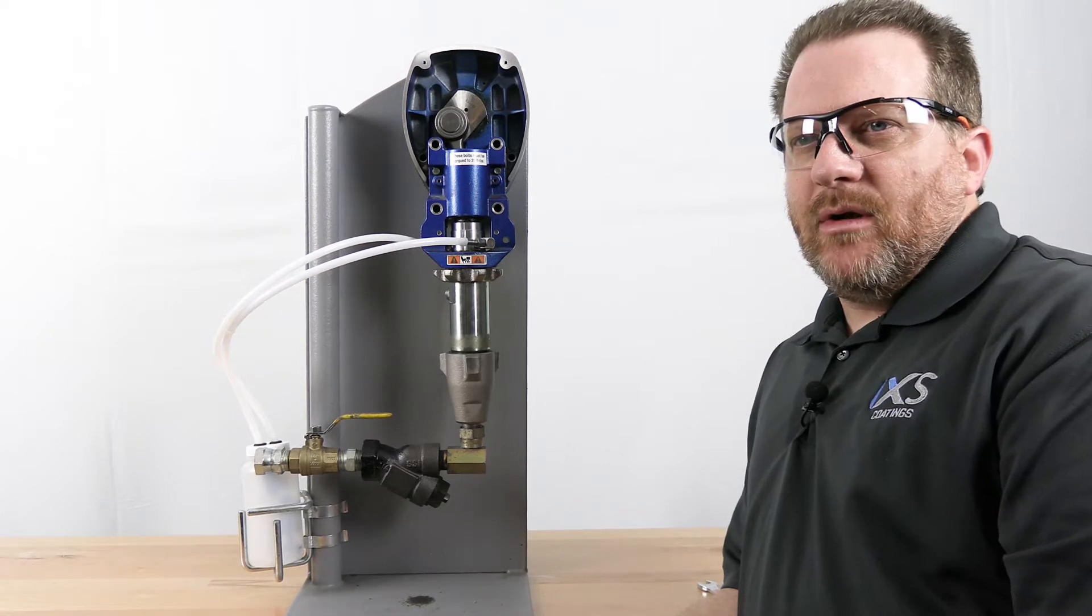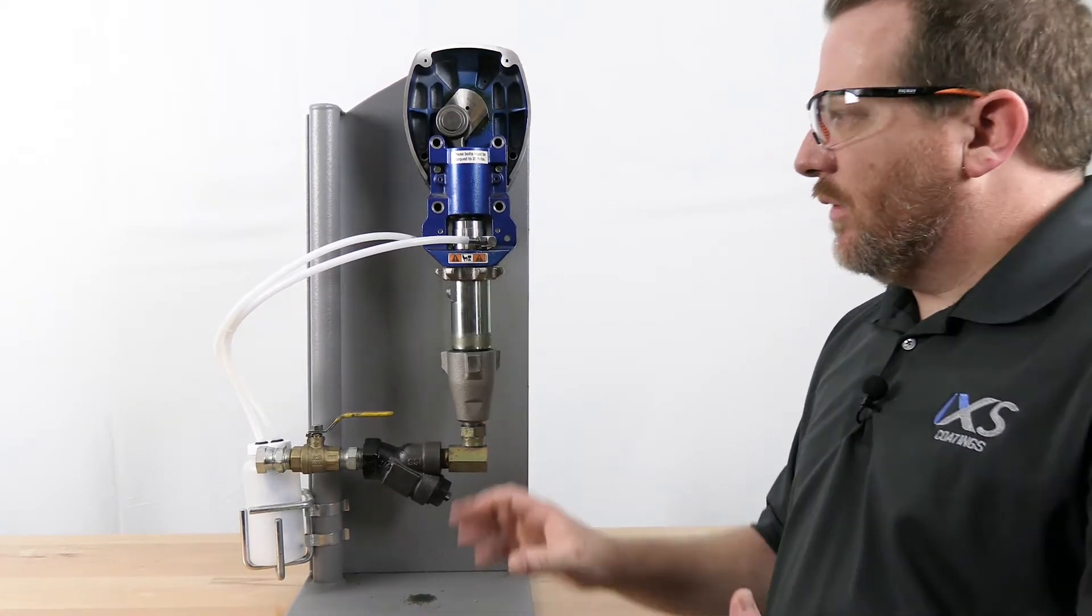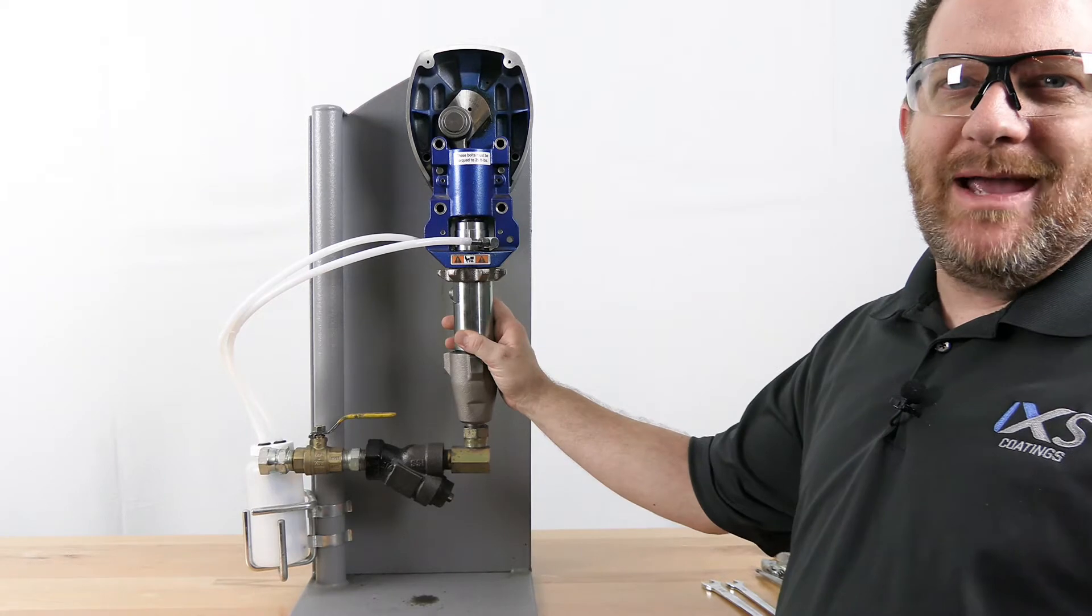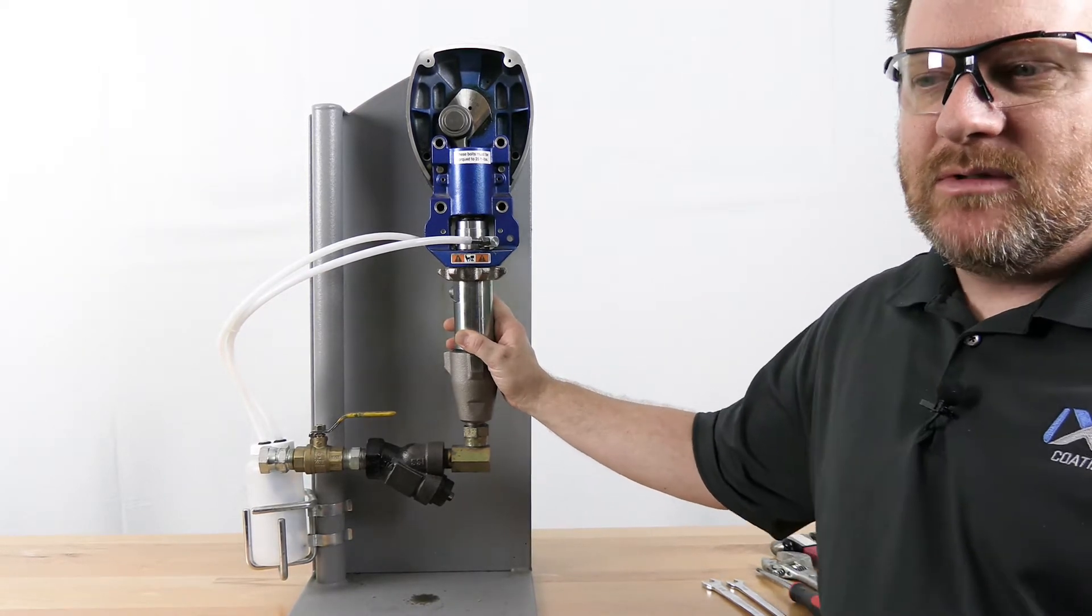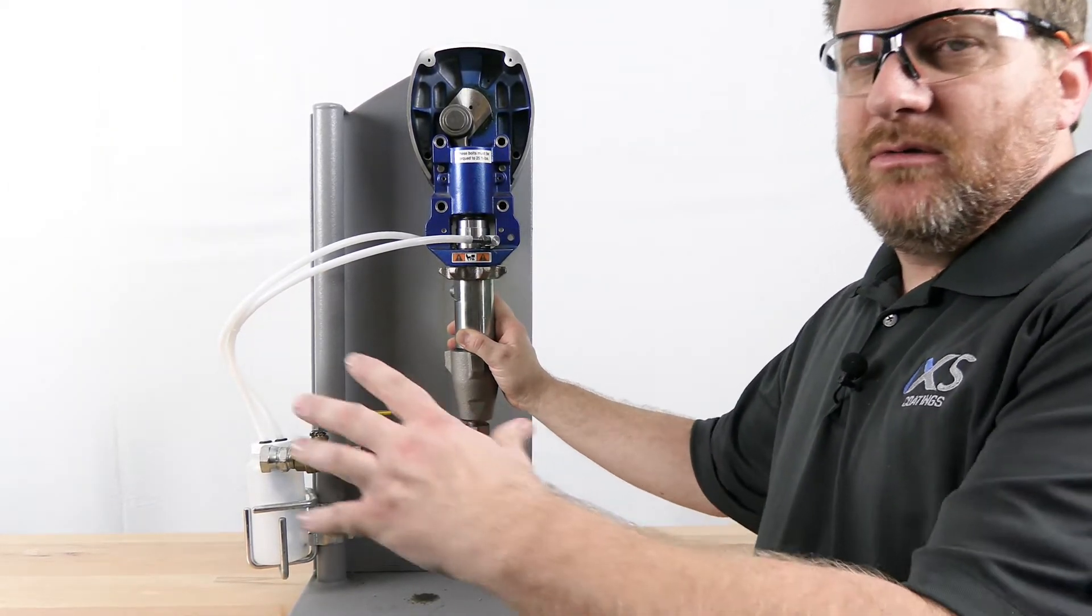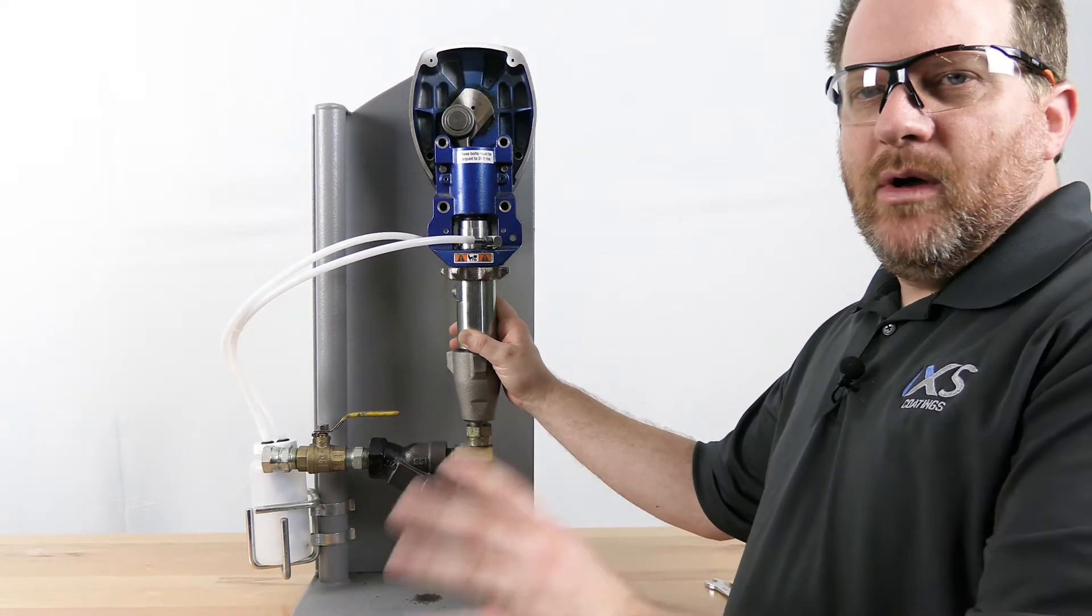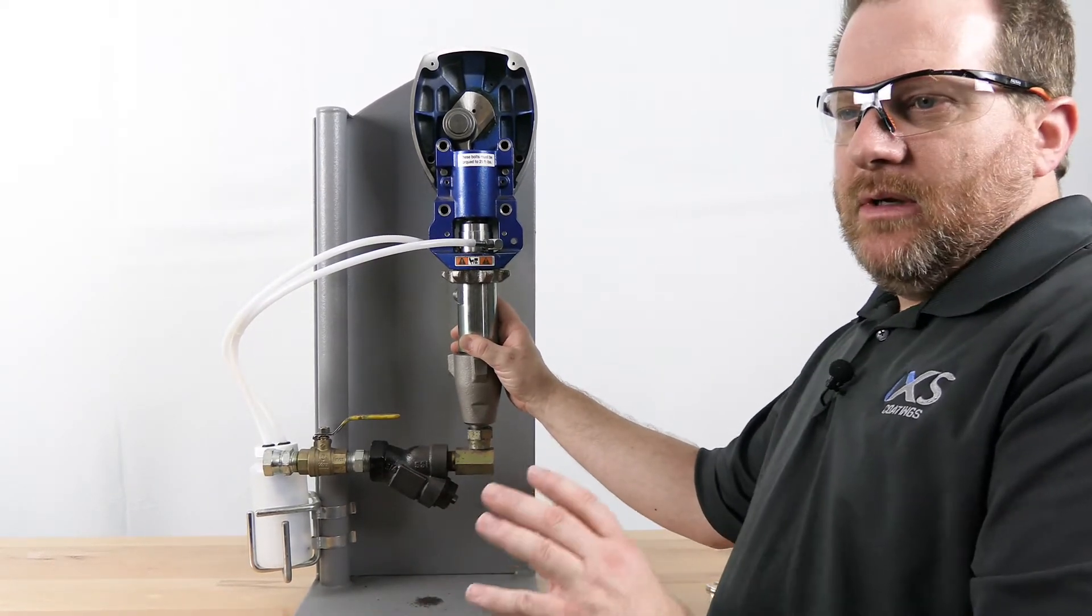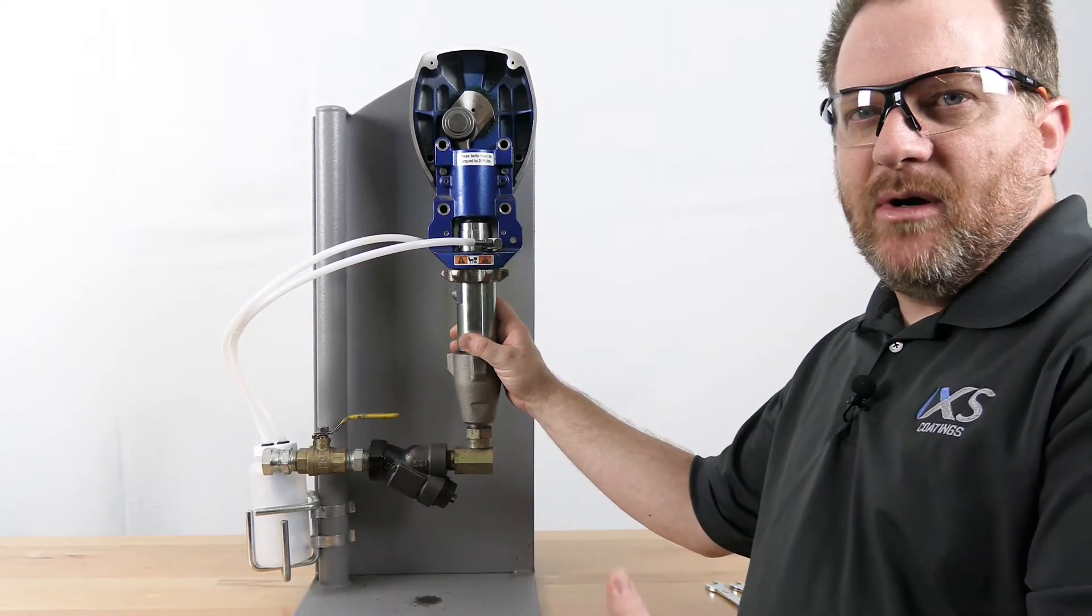This is more about the supply side when the displacement pump is not building pressure and you can't start your machine properly. First thing you want to start is at the drum. Make sure you have product in the drum and that you've got air pressure to your pump.